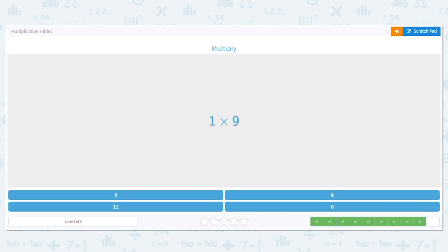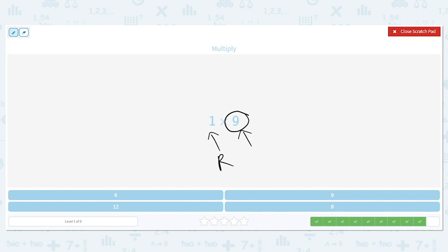1 times 9. We know our rule that any number times 1 equals that other number. But again, if I were to use an array, I would have how many rows: 1, and how many items in the row. That's why I'm putting the number sign. 9.